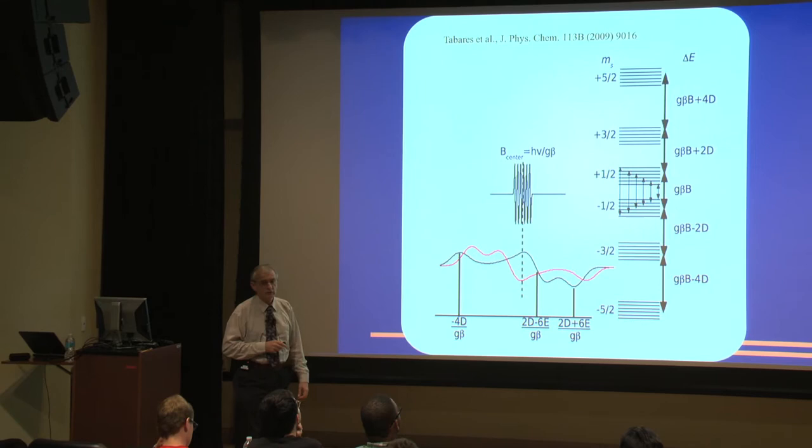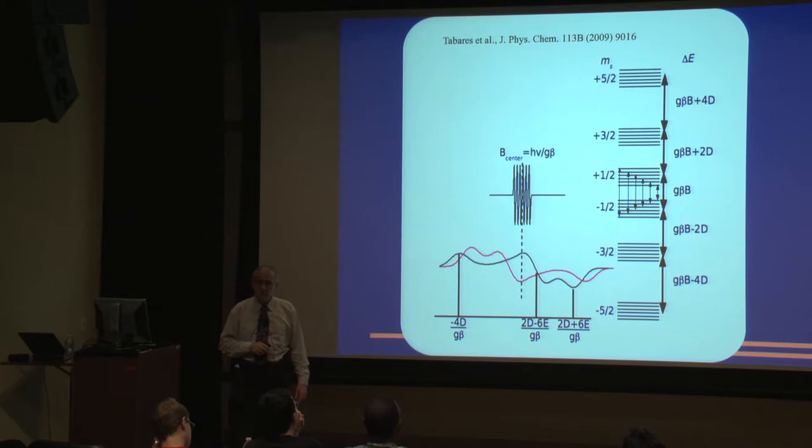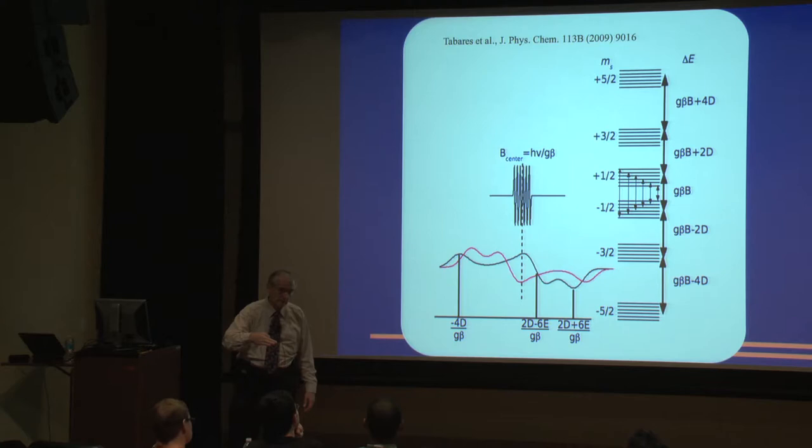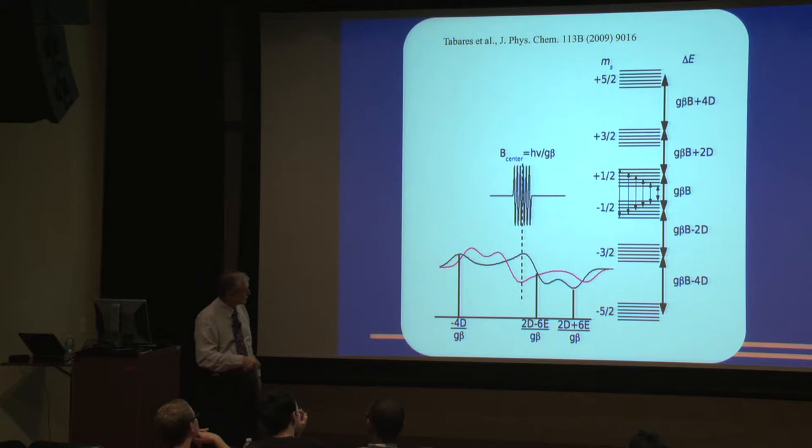I have a lot more states than just two to consider. So the next graph introduces that. I have one, two, three, four, five, six different electron spin states. Each of these states is further split by the fact that I have a nucleus spin on the manganese, also five halves. So each of these states is split into six more. The splitting for the nucleus spin is much smaller because it has a much smaller magnetic moment.